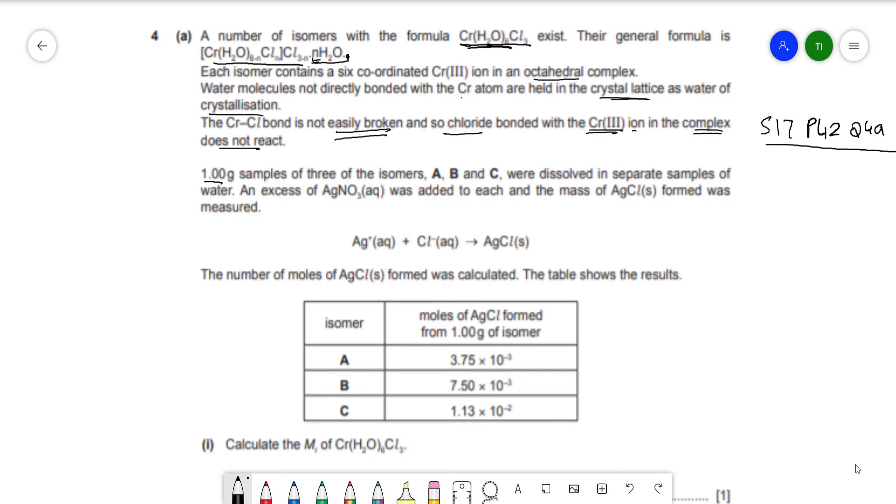It's one gram samples of three isomers A, B, and C that were dissolved in separate samples of water. And an excess of AgNO3 were added to the separations, and AgCl was formed. And this is the ionic equation for the white precipitate of AgCl. The moles of AgCl formed was calculated, and the table shows the results. So from one gram, the moles of AgCl.